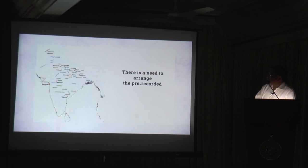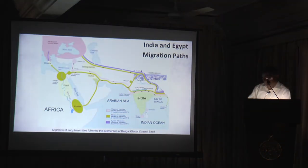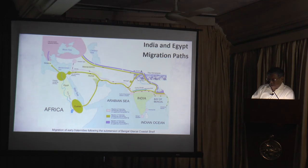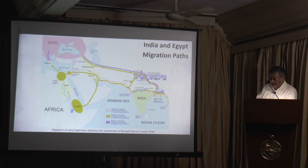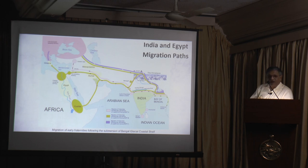There is a need to arrange the pre-recorded period of India based on available ground evidences. Today we are specifically going to concentrate on available genetic data to establish that early post-glacial period genetic identities like R1-Alpha and R1-Bravo haplogroups originated on the Bengal coast and migrated from Gangaridi or ancient West Bengal to different directions.